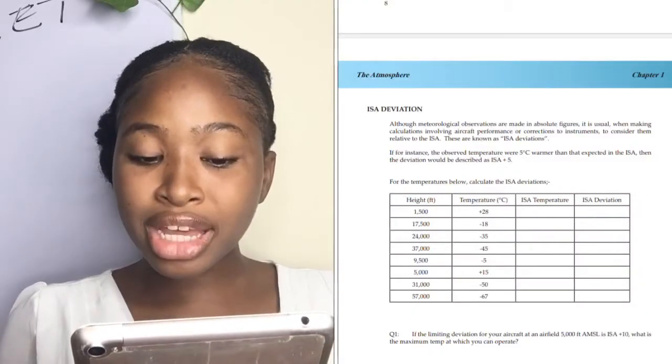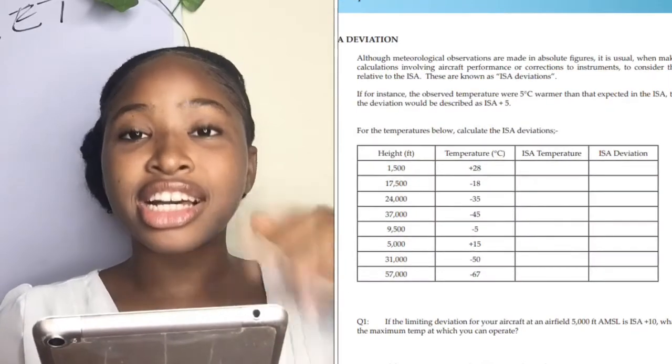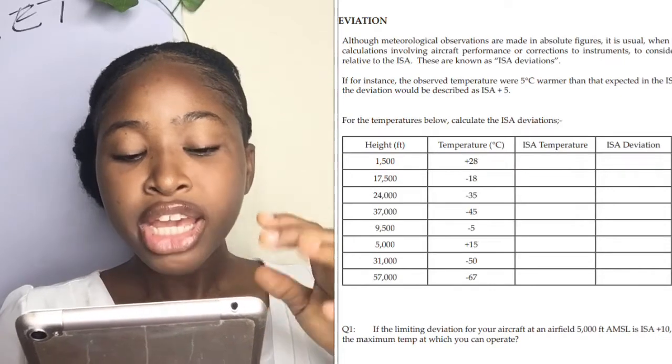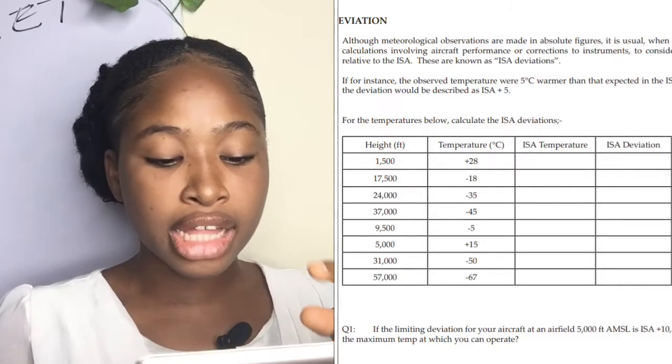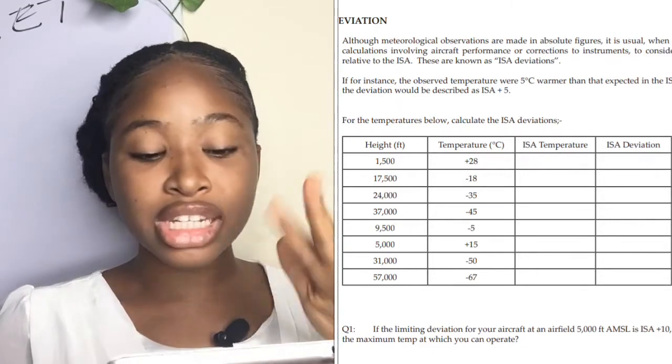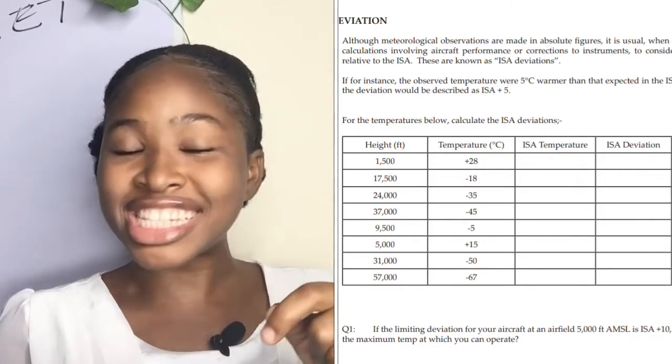These calculations actually take a lot of time, so we are going to answer just three questions in today's episode. Stay tuned and let's start right now. Before we start, I'm going to explain some things we'll use to solve these equations. The table on your screen shows the questions we're solving: heights of 1,500 feet, 17,500 feet, and 24,000 feet.